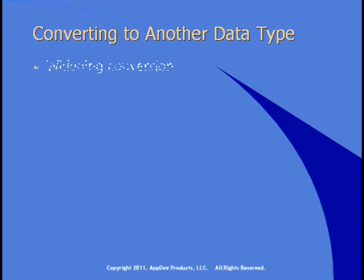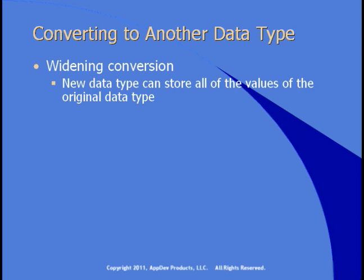There are two types of conversions: widening and narrowing. In a widening conversion, the new data type is capable of storing all of the values that can be stored in the original data type. For example, if you convert a 32-bit integer to a decimal, that conversion will always succeed because the decimal can store everything that a 32-bit integer can. Because there's no risk of data loss, the compiler will make the conversion for you automatically. You don't have to write code to make a widening conversion happen.